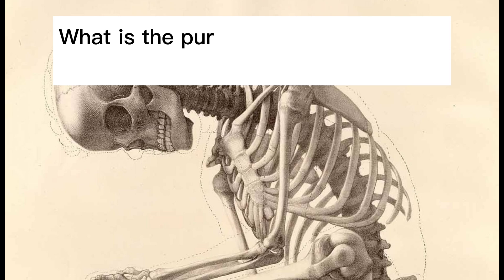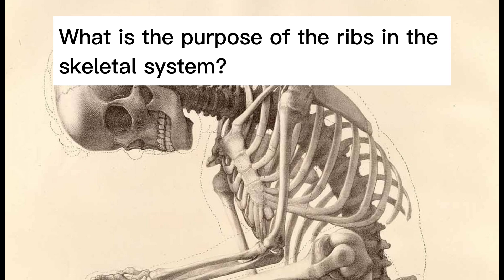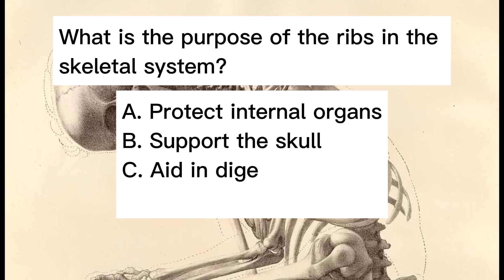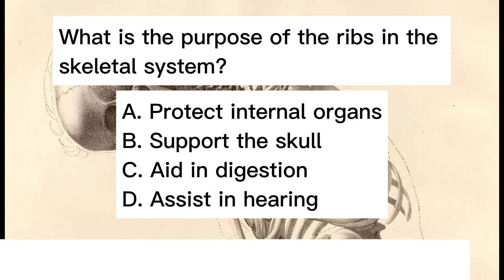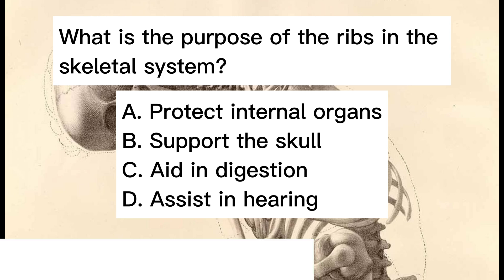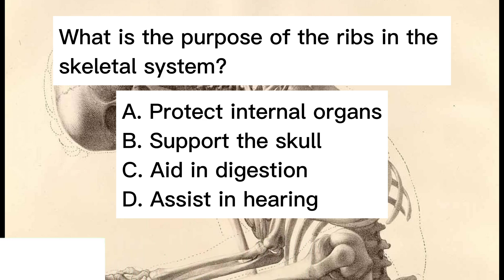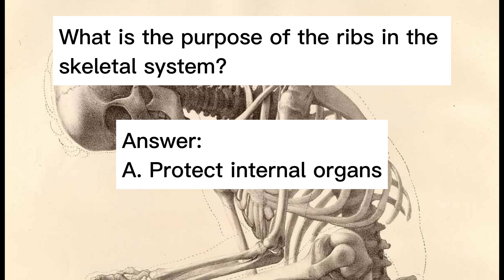What is the purpose of the ribs in the skeletal system? A. Protect internal organs. B. Support the skull. C. Aid in digestion. D. Assist in hearing. Answer: A. Protect internal organs.